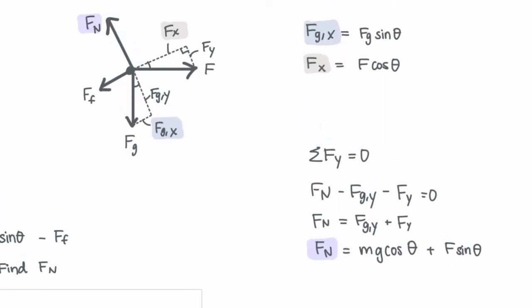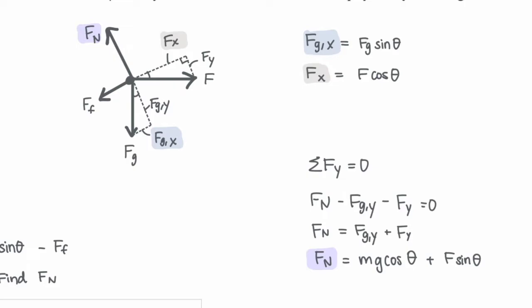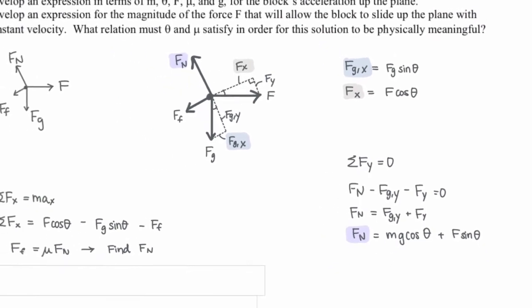Fgy is going to be on the adjacent side of the gravity triangle, so we can say mg cosine theta. And the force applied in the y-direction is on the opposite side of the triangle for F, so that's going to be F sine theta.